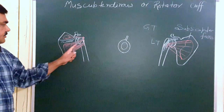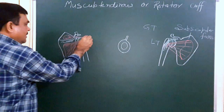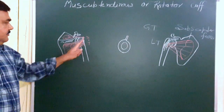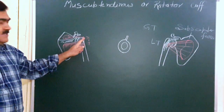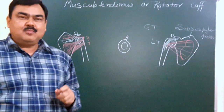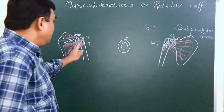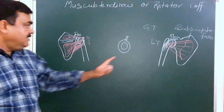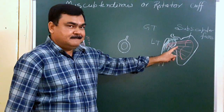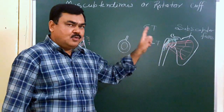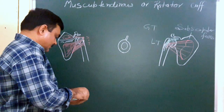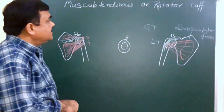So three muscles on the posterior aspect — supraspinatus, infraspinatus, and teres minor — attach on the posterior aspect of the greater tubercle. And anteriorly, on the lesser tubercle, subscapularis is attached. These four muscles join together to form the musculotendinous cuff.